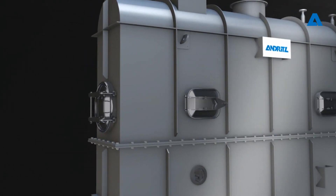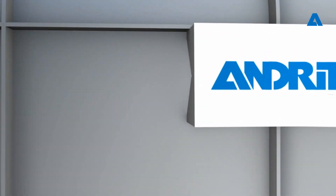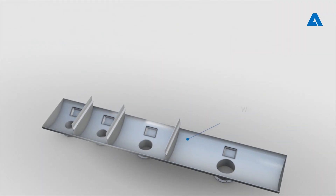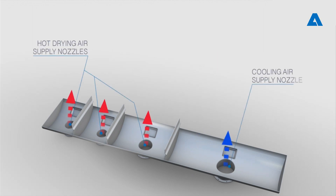Every fluid bed consists of the following segments. Wind box, divided into several individual subsections. It receives the incoming fluidization air or inert gas from the supply air installation.